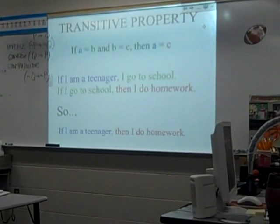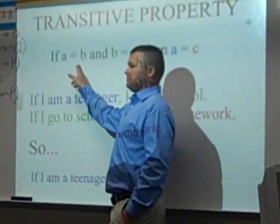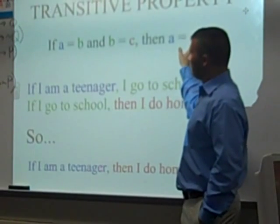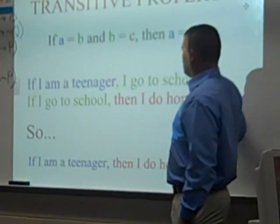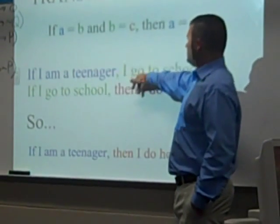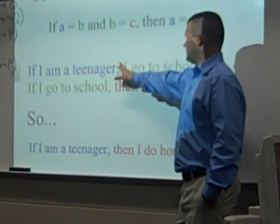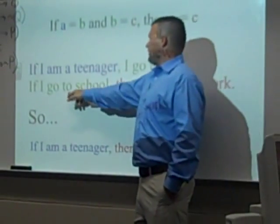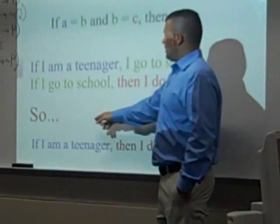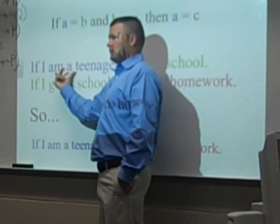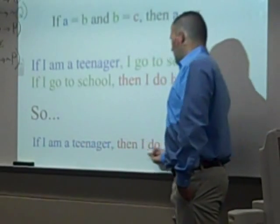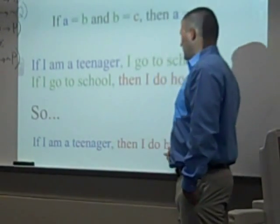What we're talking about before we leave is the transitive property. Transitive property is this: if A equals B and B equals C, then A must equal C. And I have them color-coordinated for you. So the first sentence says: if I'm a teenager, then I go to school. The second sentence says: if I go to school, then I do my homework. So our hypothesis is: if I'm a teenager. Our conclusion is: then I do homework. So our conditional statement comes to be: if I am a teenager, then I do homework.